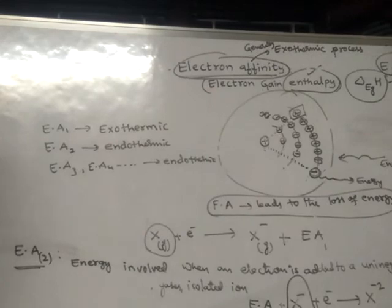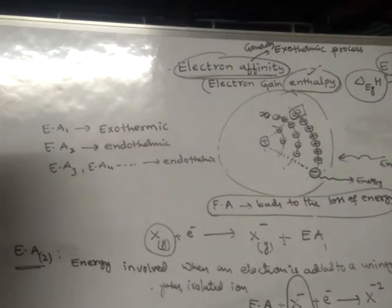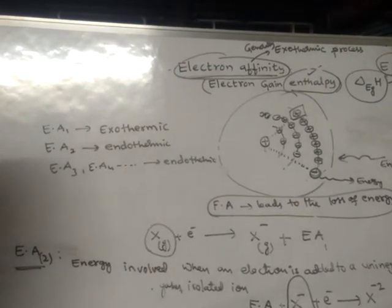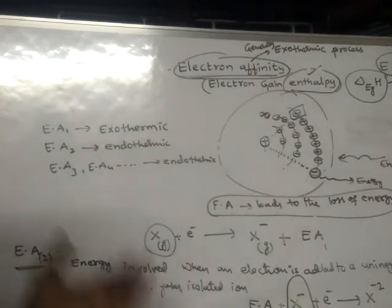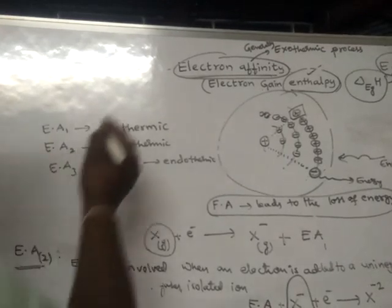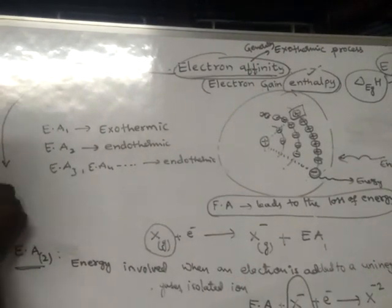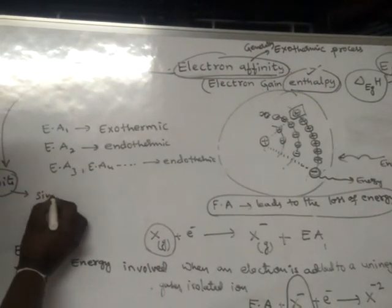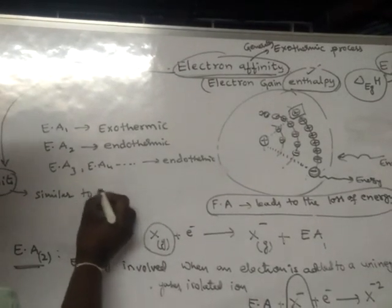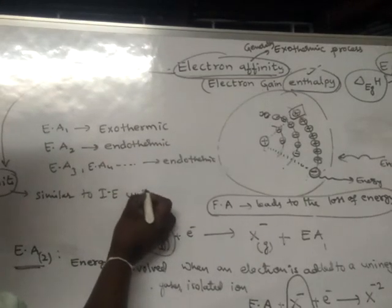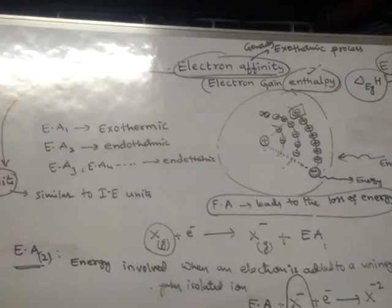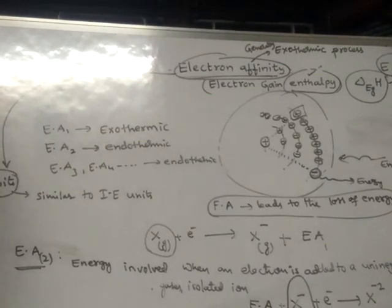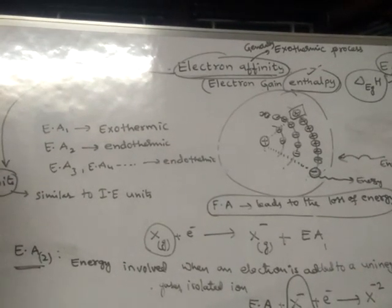So electron affinity is another important periodic property. The units of electron affinity are similar to ionization energy units. We will learn some more points about electron affinity in the next class.